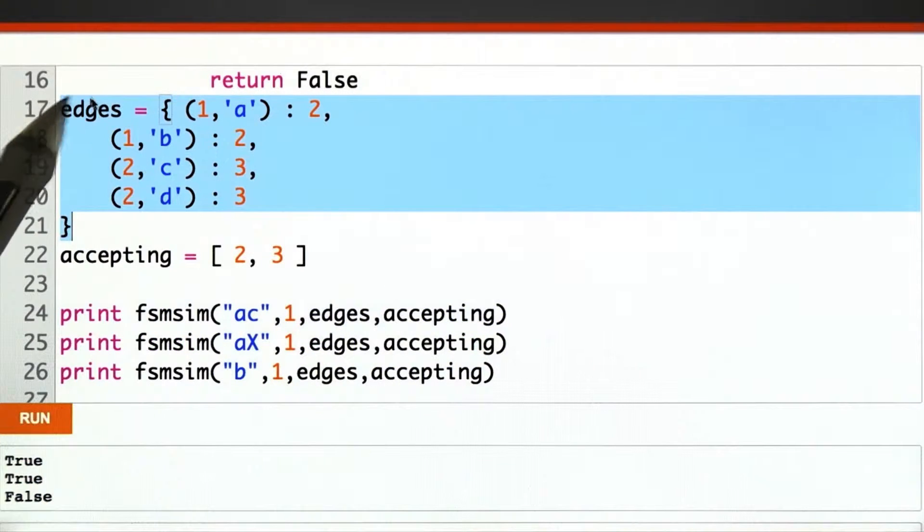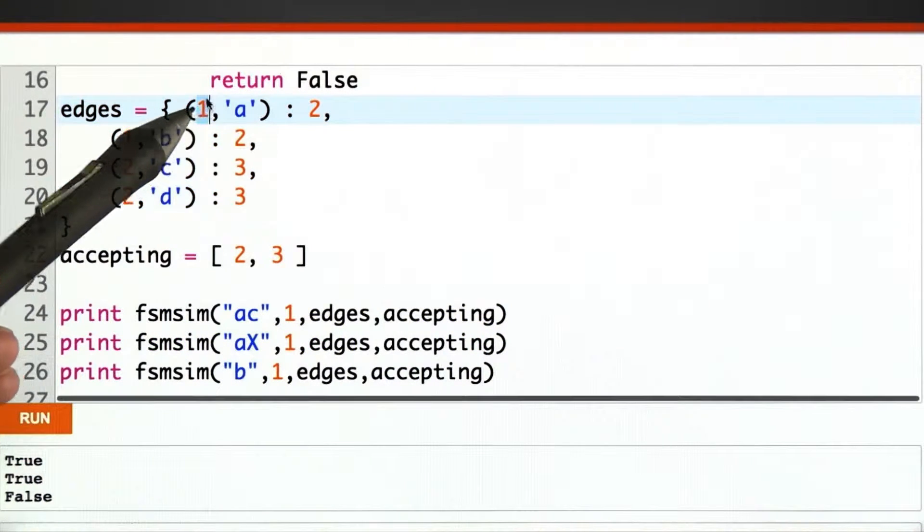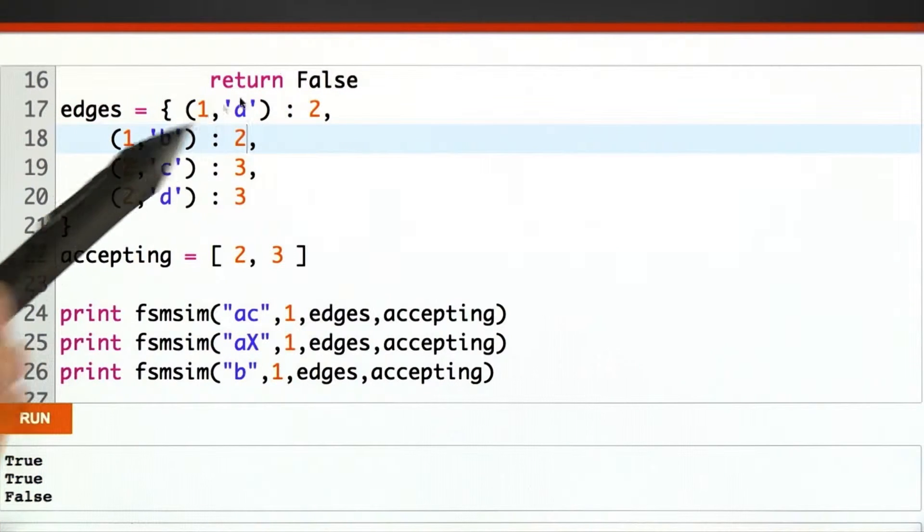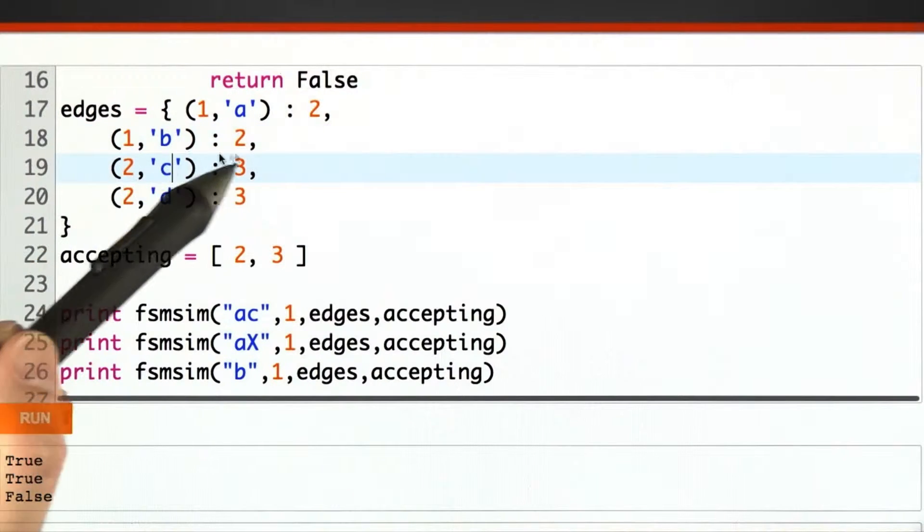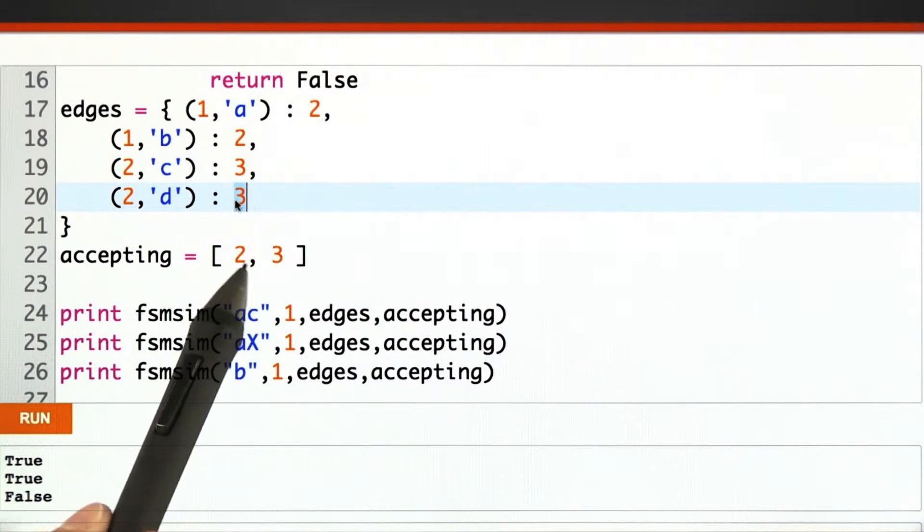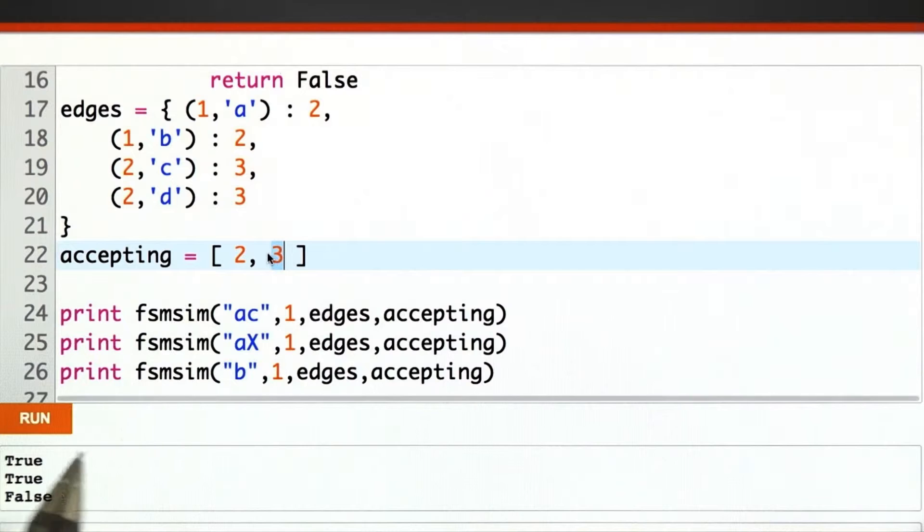Here at the top, I've encoded the edges. From state 1 on A, we go to state 2. From state 1 on B, we go to state 2 as well, A or B. From state 2 on C, we go to state 3. From state 2 on D, we go to state 3. And both states 2 and 3 are accepting.